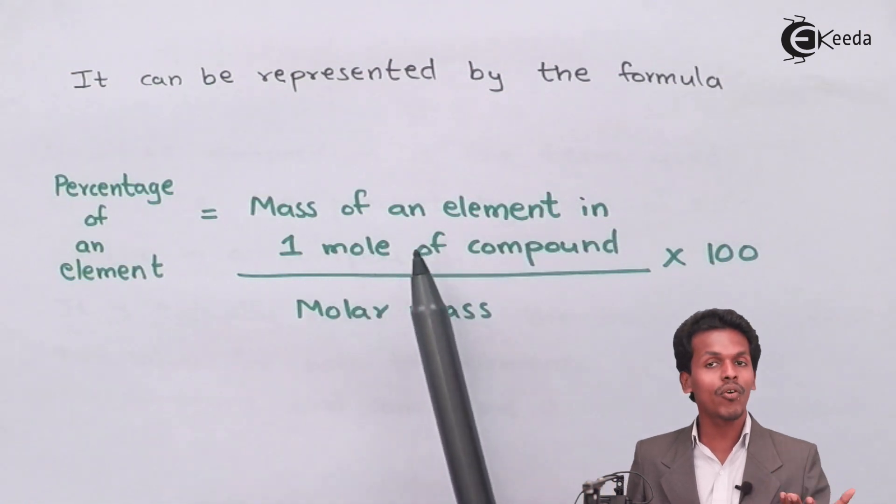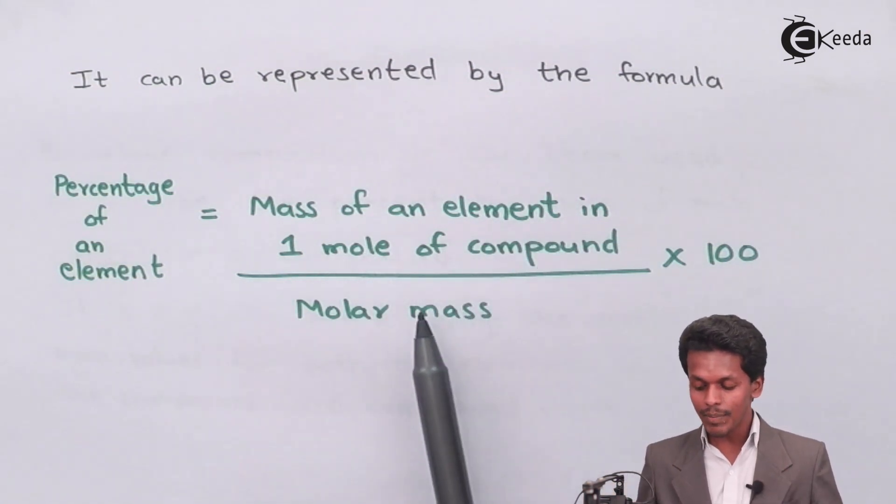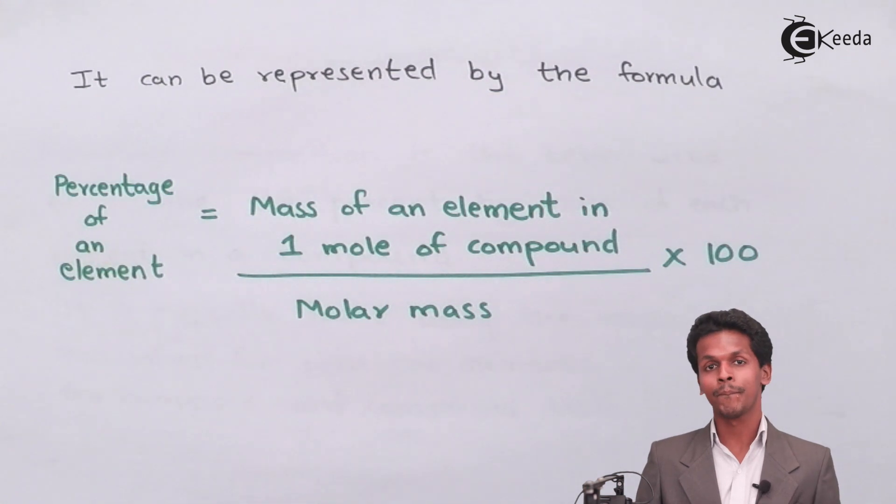Then the molar mass of the compound times 100. This is how we could calculate the percentage of a particular element which is present in a compound.